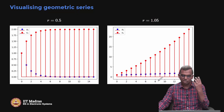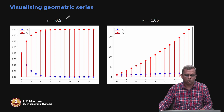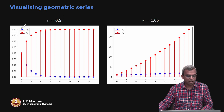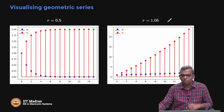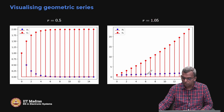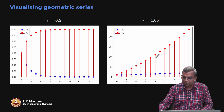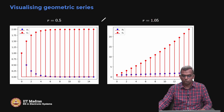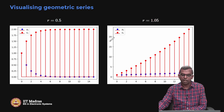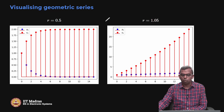Let us see some pictures — just to visualize quickly. If r = 0.5, you see that a_n drops down as 0.5^n and S_n quickly converges to 2, which is 1/(1−0.5). On the other hand, if r = 1.05, a little above 1, a_n is slowly increasing and S_n is diverging to plus infinity. Stem plots are very useful visualizations for how sequences and series behave.